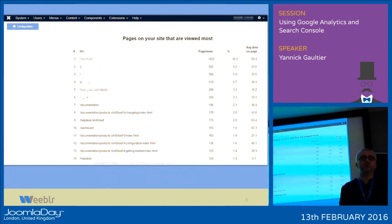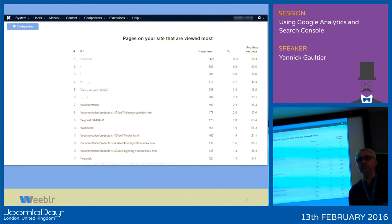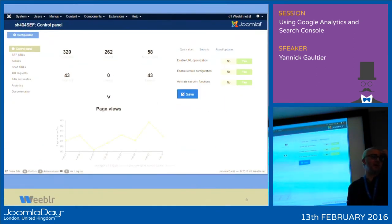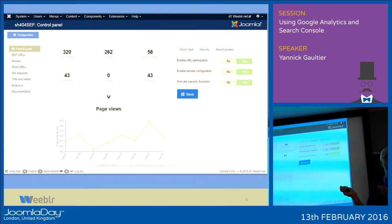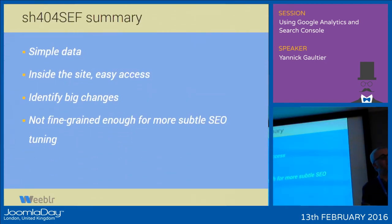Here is another example from SH404SEF backend where you've got the most-viewed pages with data that starts to be a little bit actionable, because you've got something like average time on page — for each page, you know how much time a user spends there. That might be something you can use to alter your content. We also provide things like 404 form numbers on your site, the list of URLs that were never visited. But that's still very basic, and too difficult to use for fine-grained SEO.